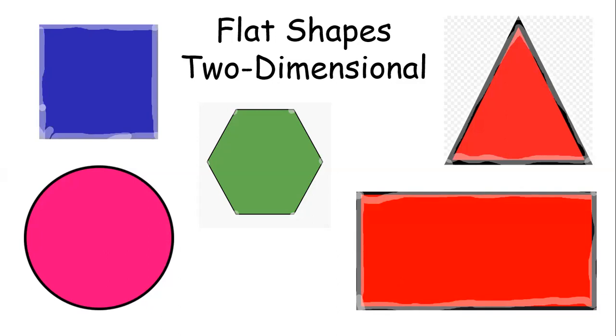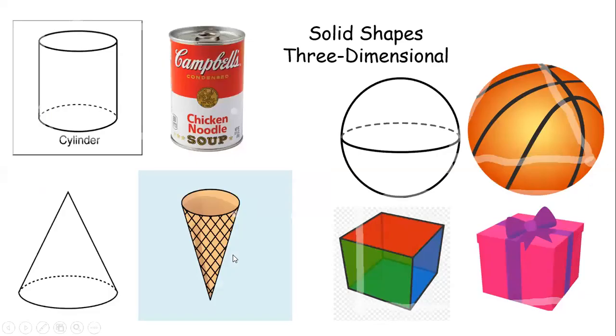So those are my flat shapes or my two-dimensional shapes. We're going to talk now about our 3D shapes or our solid shapes. And I showed you the shape and I also showed you an example of what it may look like as something in real life. So what is a 3D shape or a solid shape?